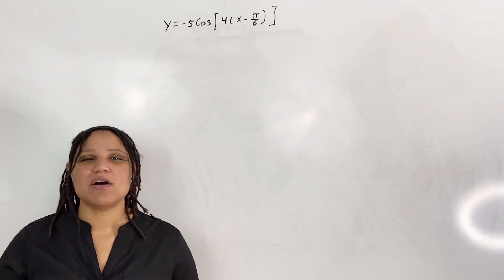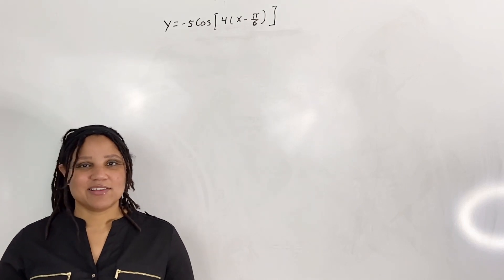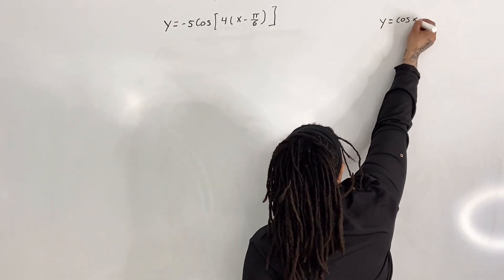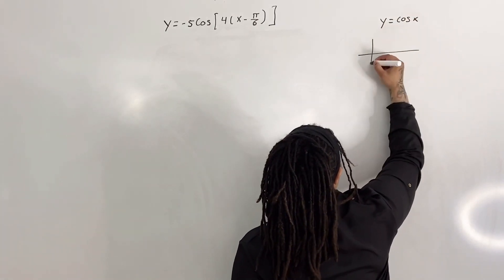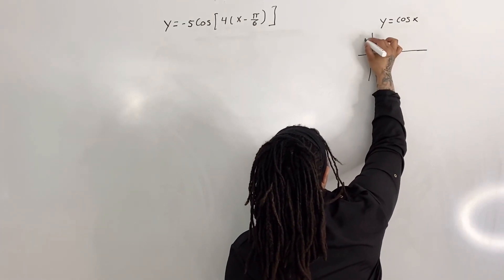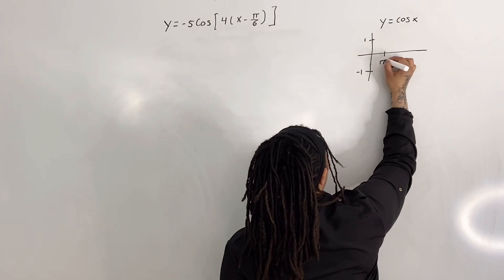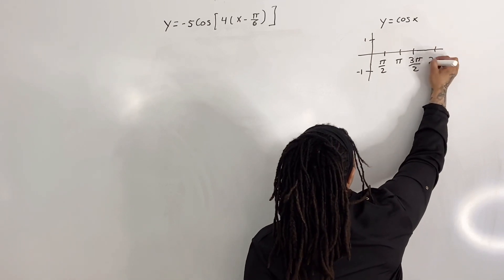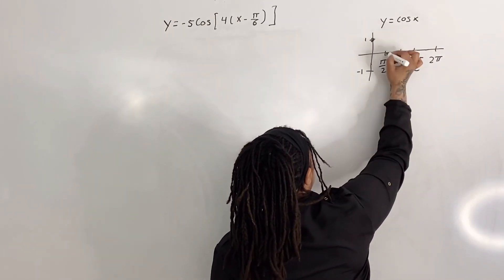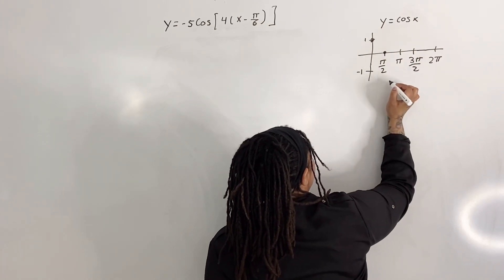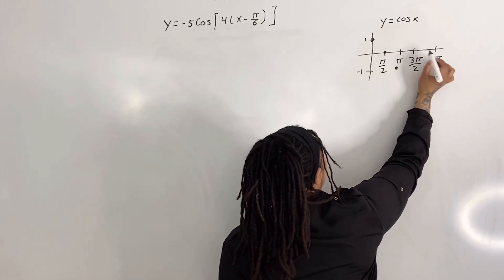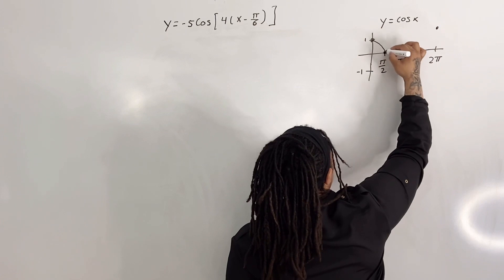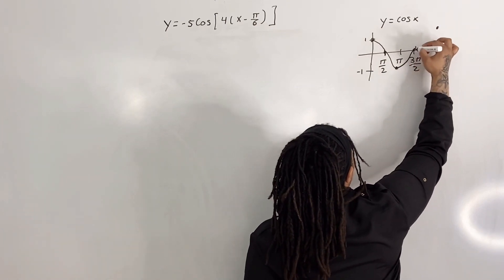The first thing we want to do is know what the original graph of cosine looks like. The original graph of y equals cosine x has a high of 1 and a low of negative 1. It hits the x-axis at pi over 2, has a low of negative 1 at pi, returns to 0 at 3 pi over 2, and has a high at 2 pi. The graph looks something like that.